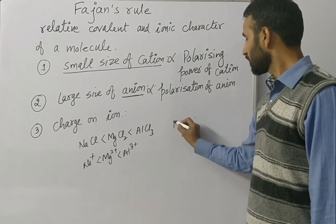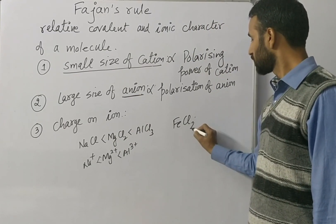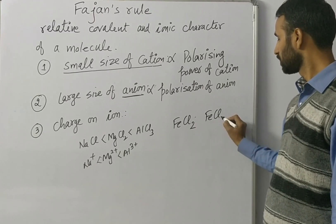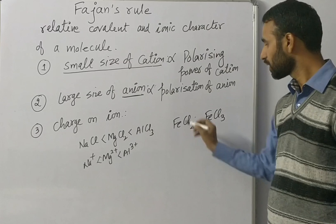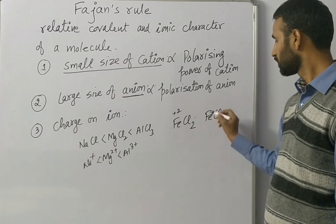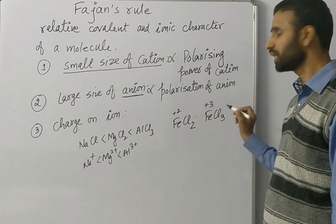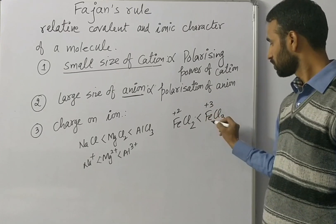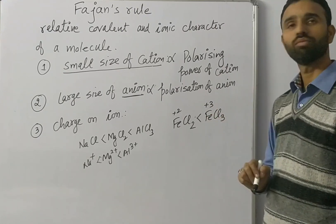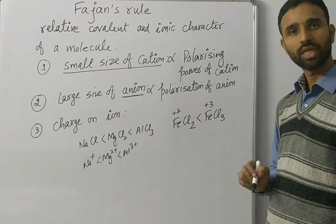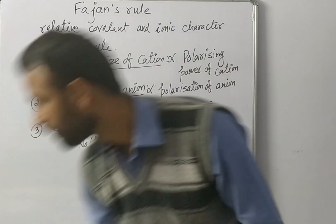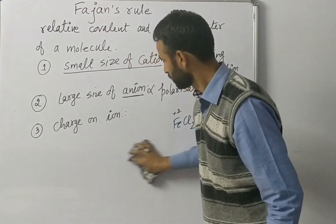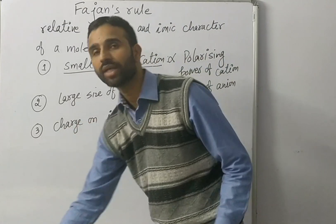If we compare ions of similar elements, like FeCl₂ and FeCl₃: in FeCl₂, iron is +2, and in FeCl₃, iron is +3. Higher charge favors covalent character, so FeCl₃ is more covalent than FeCl₂. We can summarize this as: higher charge on the ion favors greater covalent character.